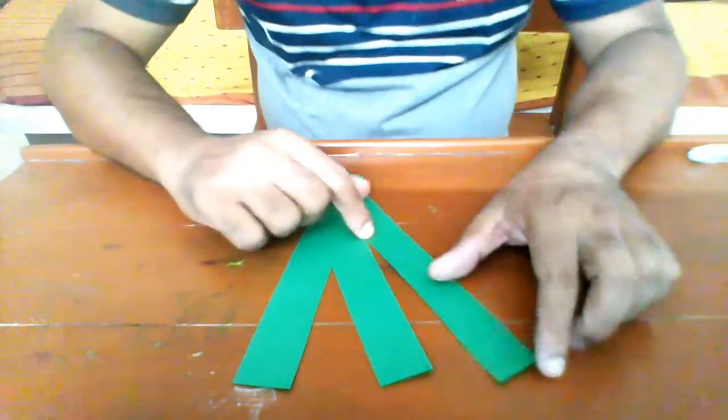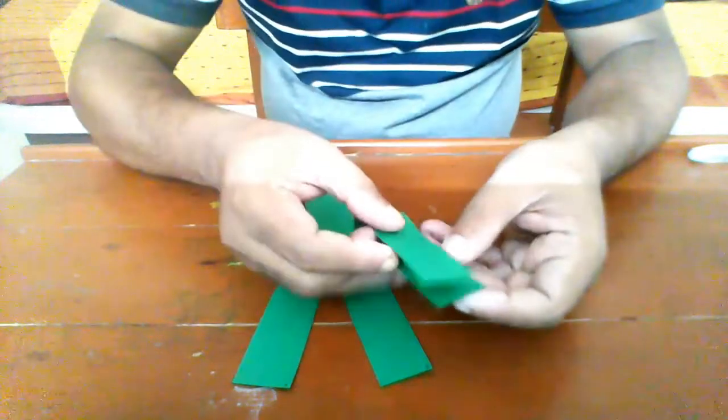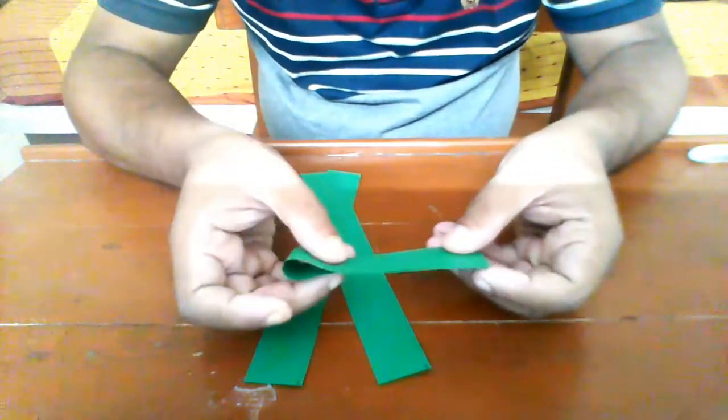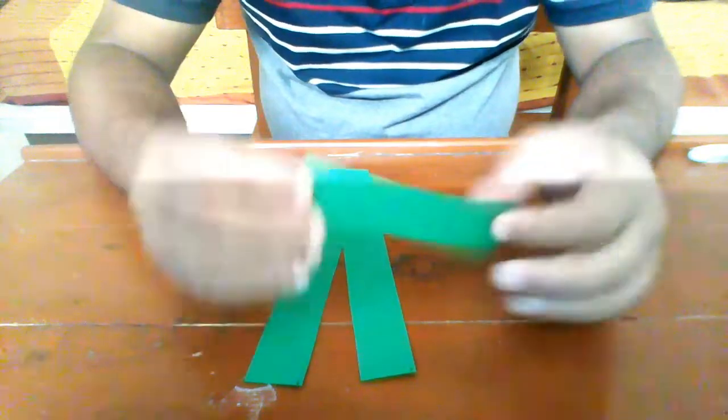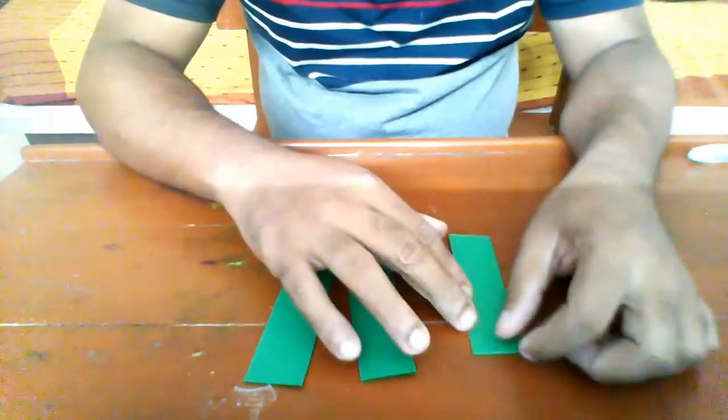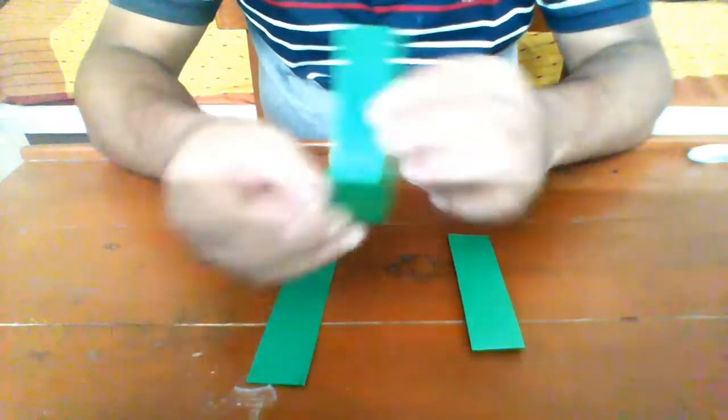Now you have three strips of paper. You just fold them into half and press the corner properly so that the fold remains as it is.